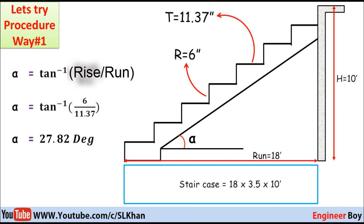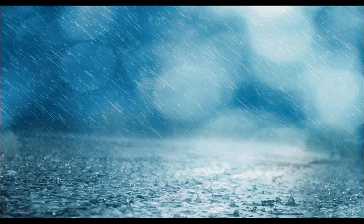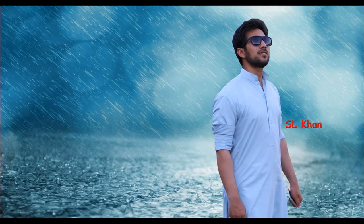In government buildings, the rise of stairs is typically only six inches and the tread is only 12 inches — that is considered the best combination for a compatible stair. This design is only for single flight stairs. For double flight stairs, circular stairs, or other types, the calculation is more complex. If you need those videos, please hit the like and subscribe button to motivate me to make those videos. Thank you for watching, see you next time.